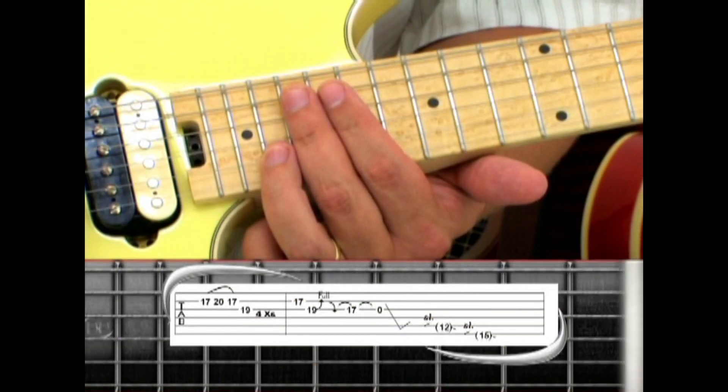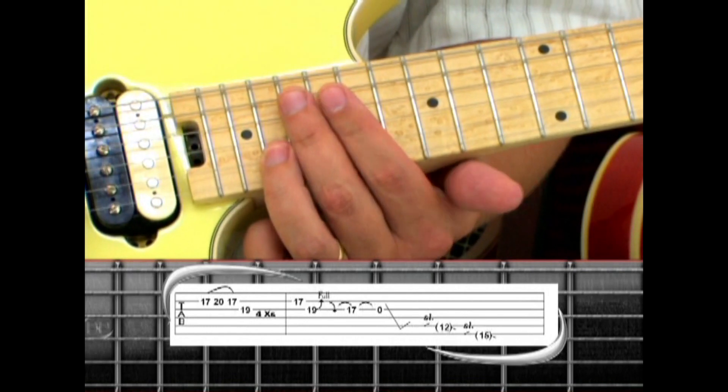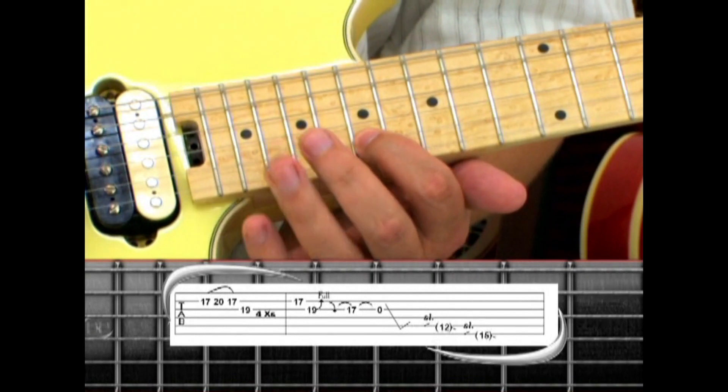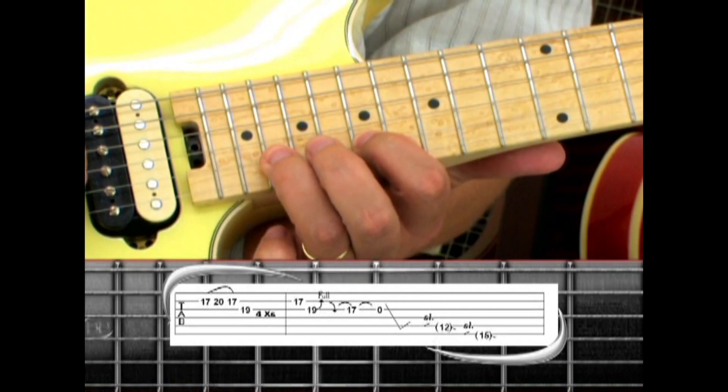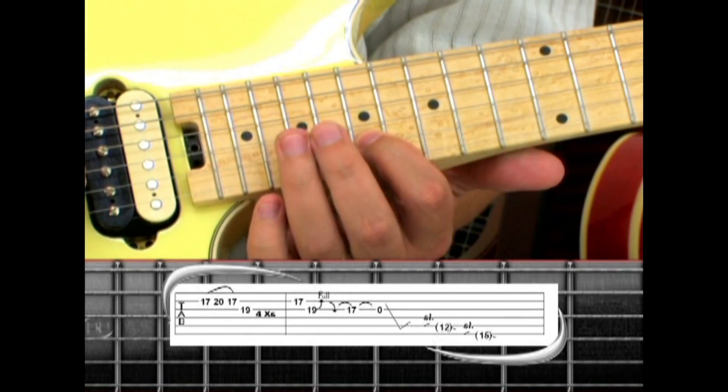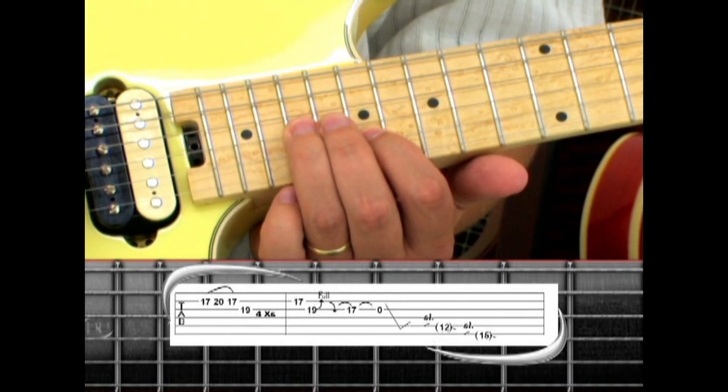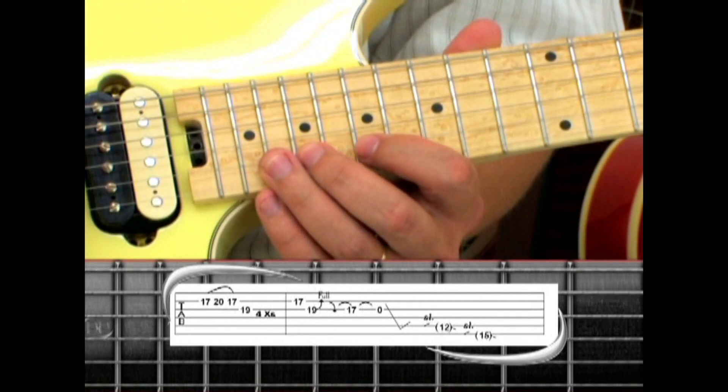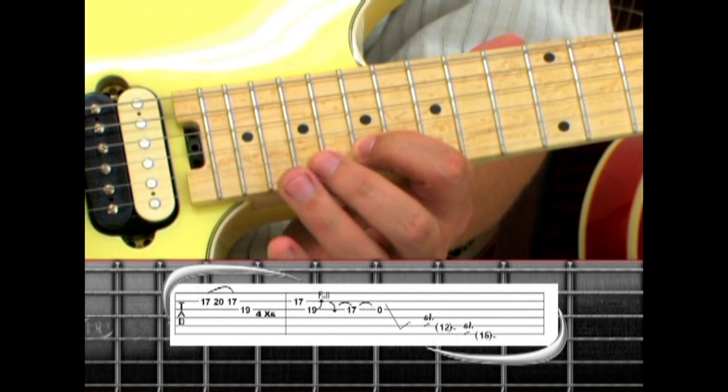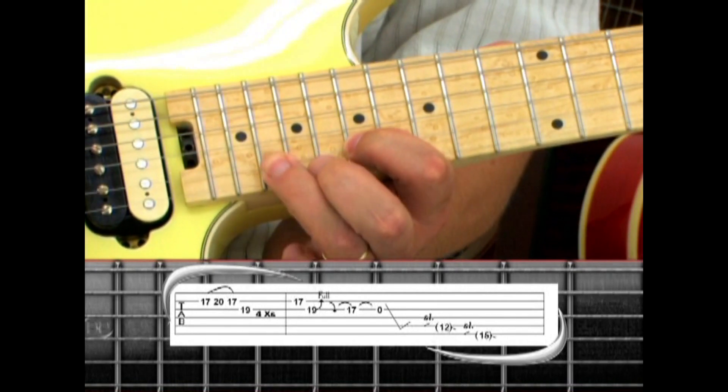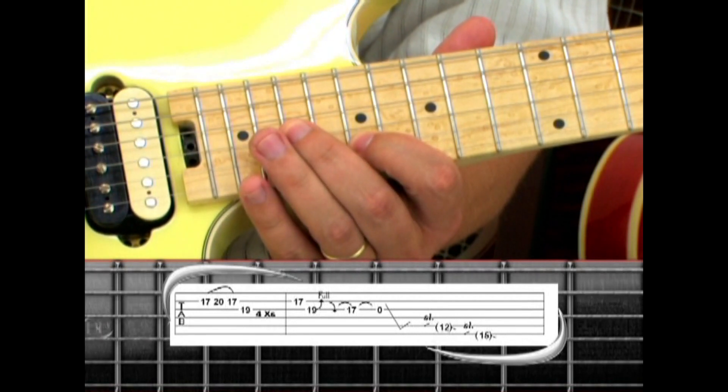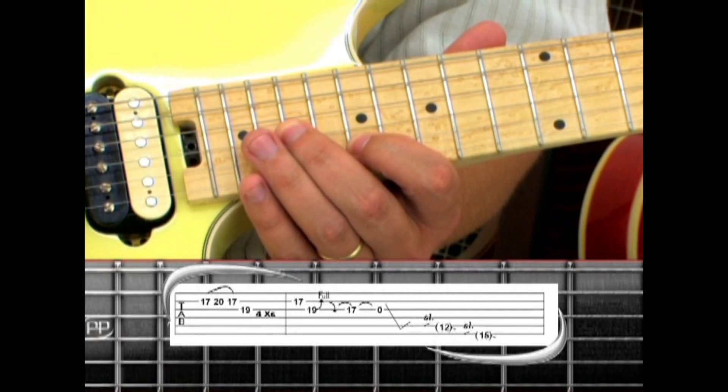To wrap up the solo, we start phrase seven with hammer pulls on the second string seventeen, twenty, seventeen, then third string nineteen. Use your index finger for seventeen, ring for twenty, pull off to seventeen, then middle finger for nineteen. This is played four times.